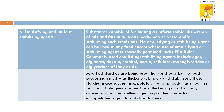Emulsifying and stabilizing agents: foods which consist of two different immiscible liquid phases are called emulsions. To form a uniform emulsion we need emulsifying or stabilizing agents. Stabilizing agents are specifically permitted under production of certain food groups. Commonly used emulsifying or stabilizing agents include agar, alginates, dextrin, sorbitol, pectin, cellulose, monoglycerides, diglycerides, and fatty acids.